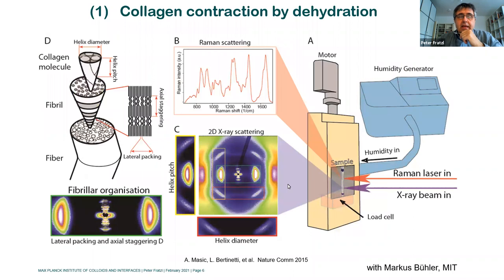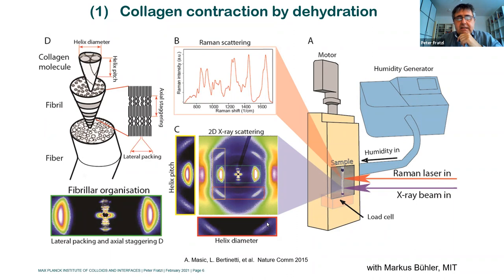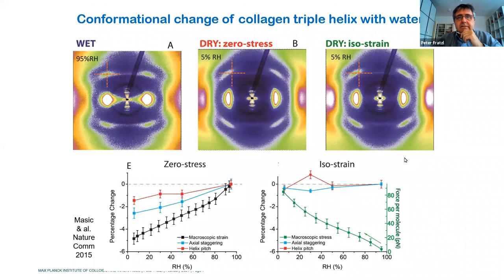The first topic is in-situ and in-operando studies. Starting with collagen: we want to understand the effect of osmotic pressure and dehydration on collagen-based tissues. For this, we need a specimen environment that controls humidity and force on the fiber, and we want simultaneous small- and wide-angle scattering, and possibly spectroscopic information at the same time.